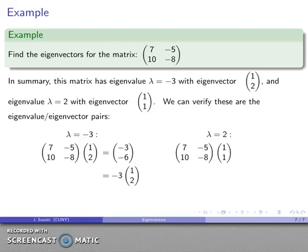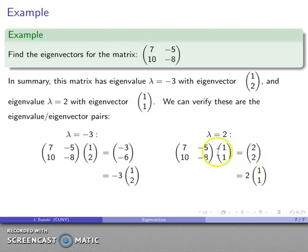Likewise, for lambda equals two, taking eigenvector [1, 1] and multiplying by the matrix gives [2, 2], which is indeed two times the original vector. This confirms that [1, 1] is an eigenvector for eigenvalue lambda equals two.